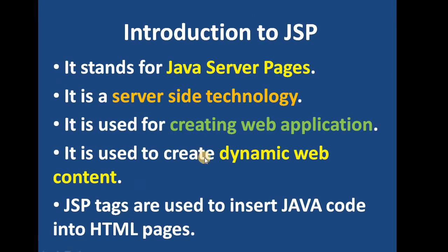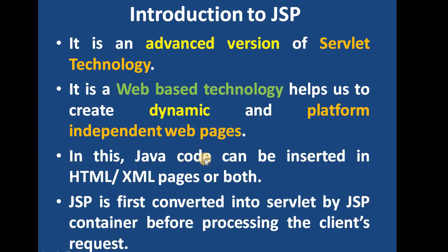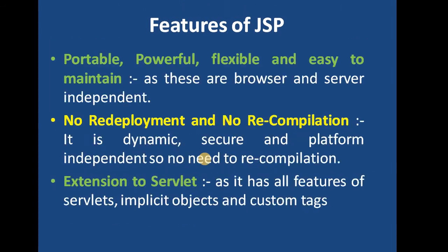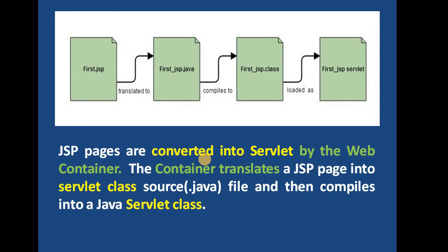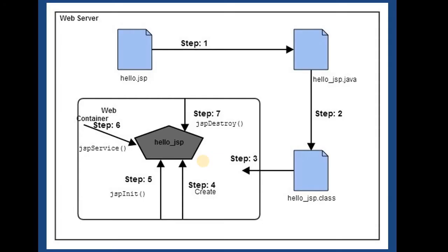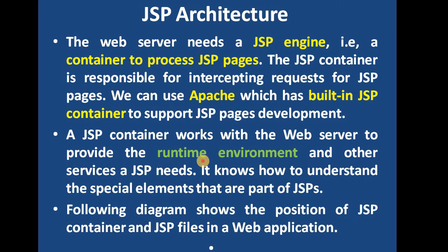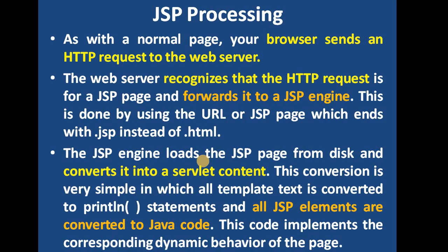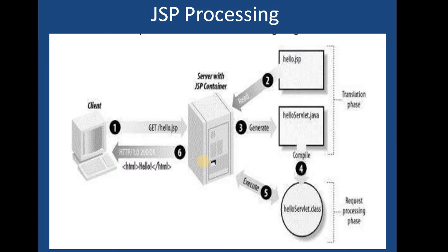We had seen the introduction to JSP — what we mean by JSP, some features of JSP, and why JSP is so popular. We talked about how a JSP page can be converted into a servlet and then executed. We had seen the life cycle of JSP and also the architecture of JSP. Then we talked about JSP processing and saw with the help of a diagram how JSP pages are processed.